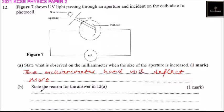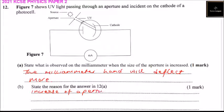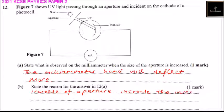Part B: State the reason for the answer. As I have said, the cathode emits electrons. So as a result of an increase in the aperture, you can say the increase of aperture increases the intensity — that is, it increases the intensity of UV on the cathode.